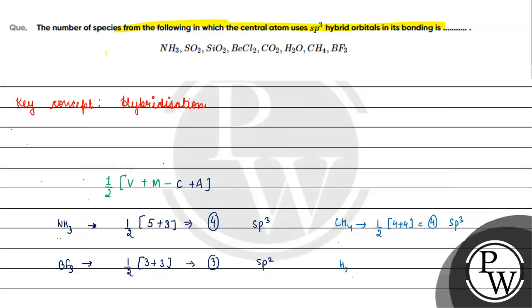Next, H2O. Oxygen is the central atom with 6 valence electrons. Adding 2 monovalent hydrogen atoms: half of (6 + 2) equals 4. That gives sp3 hybridization.